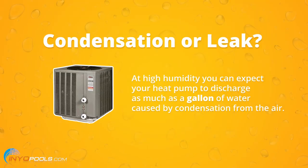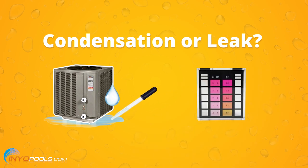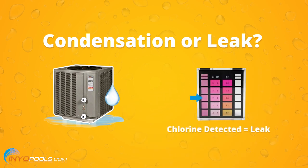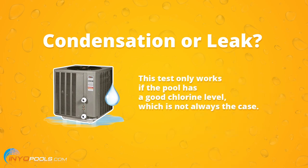Great question, Matthew. At high humidity, you can expect the heat pump to discharge as much as a gallon of water caused by condensation from the air. But to determine if it's a leak, you can test the water near the heat pump for chlorine. If the water does have a chlorine level, you have a leak. If there's no chlorine, it's more than likely condensation. However, this only works if the pool has a good chlorine level, and that's not always the case.